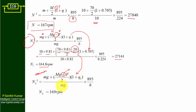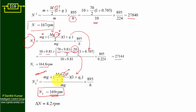Applying all parameters with the plus sign for friction gives N2 = 169 rpm. The range of speed is ΔN = N2 − N1 = 169 − 164.8 = 4.2 rpm. This is the range of speed of the governor considering the effect of friction.